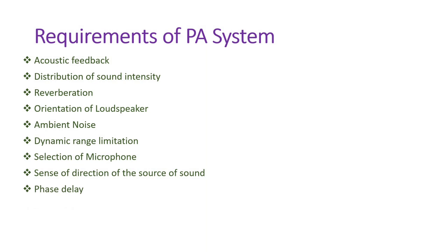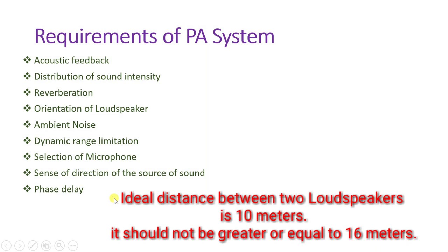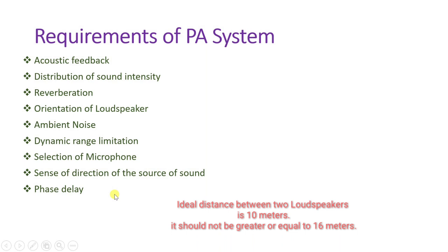Next is phase delay. Sound from the nearest loudspeaker may be heard together with sound from a loudspeaker at a greater distance, causing phase delay between the two sounds. To avoid this, loudspeaker separation distance should not exceed 16 meters. The ideal distance between two loudspeakers is 10 meters — exceeding 16 meters will start to create phase delay problems.